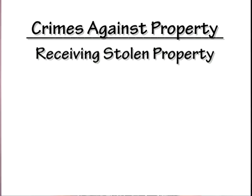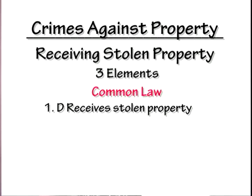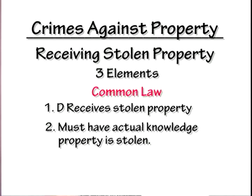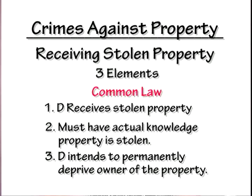Number seven is receiving stolen property. There are three elements. At common law: number one, the defendant receives stolen property; number two, he must have actual knowledge that the property is stolen; and number three, the defendant intends to permanently deprive the owner of the property.